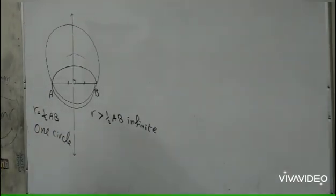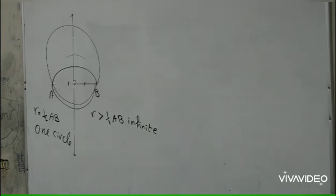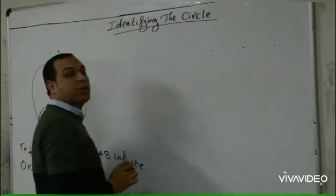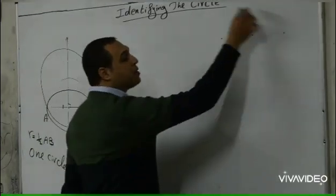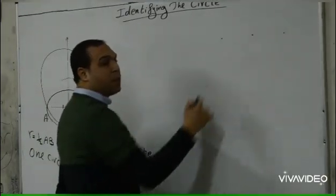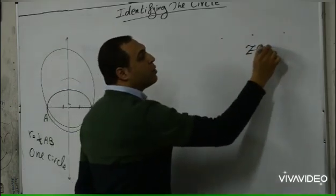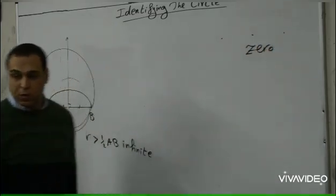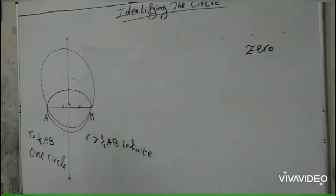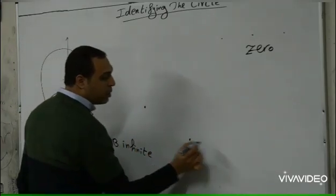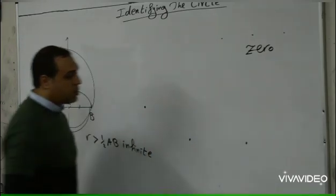What about three collinear points? There is no circle that can be drawn passing through all three at the same time — zero circles. But if the three points are non-collinear, like this one, this one, and this point, the approach changes.